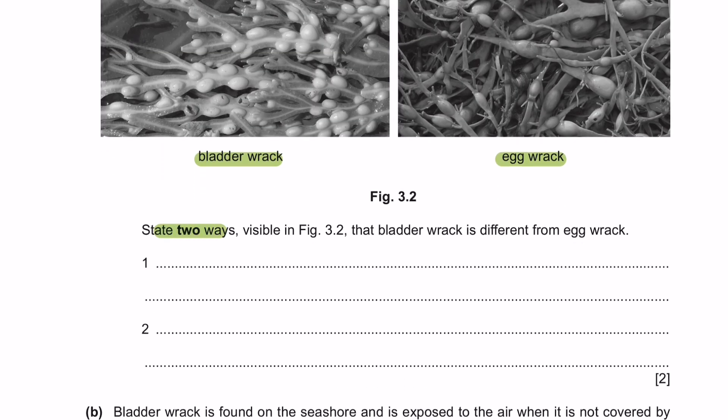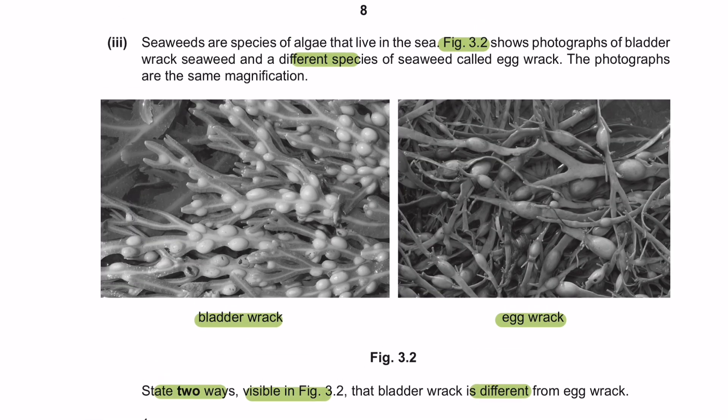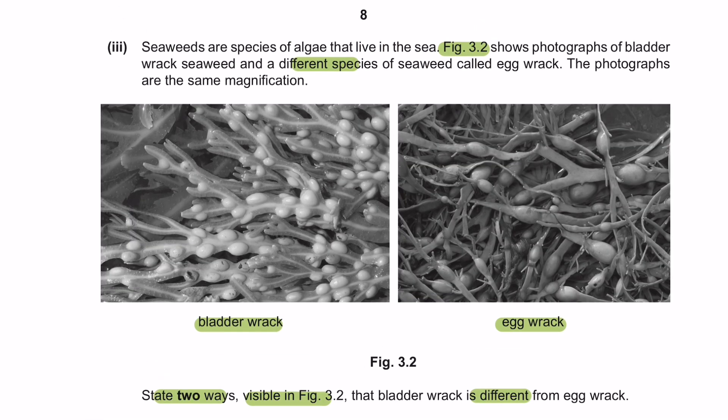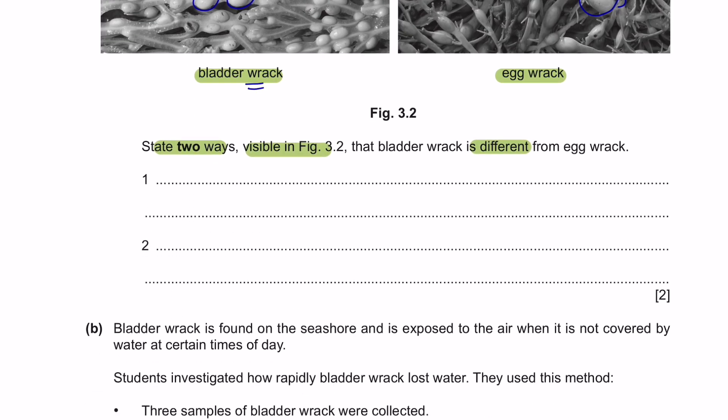State 2 ways visible in figure 3.2 that bladder rack is different from egg rack. Okay, so from what we can observe here in this figure is that there are more bladders present in the bladder rack compared to the egg racks. And then the bladder rack are also closer to each other compared to the egg rack which are further apart. And there are also bladders on both sides of the midrib. And the bladder rack are also bigger compared to the egg rack. So you can write as many differences as you can see in your answer space.